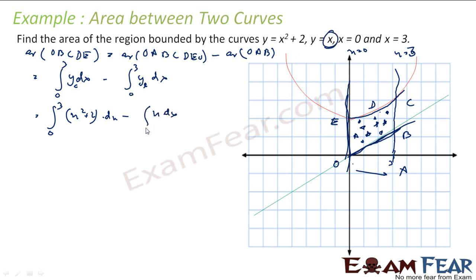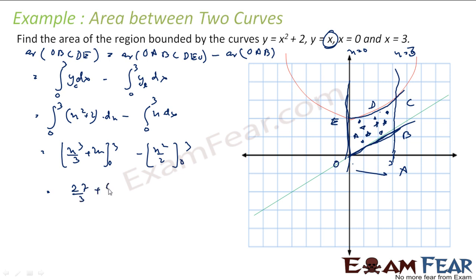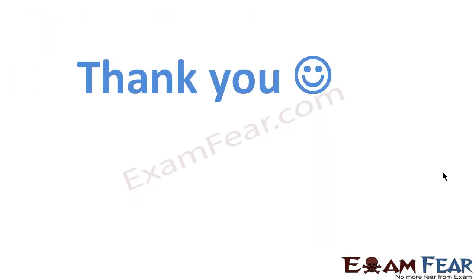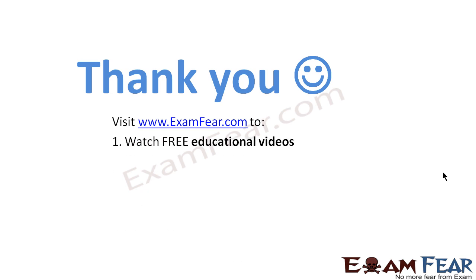So the area equals the integral from 0 to 3 of (x² + 2) dx minus the integral from 0 to 3 of x dx. This gives [x³/3 + 2x] from 0 to 3 minus [x²/2] from 0 to 3 = (27/3 + 6) - (9/2) = 15 - 9/2 = 21/2.